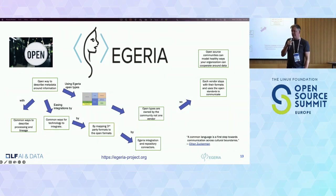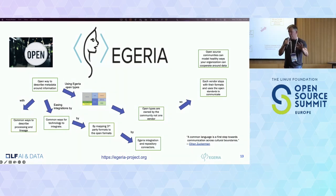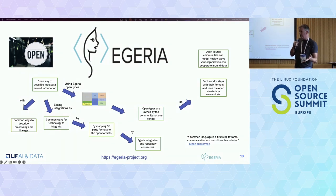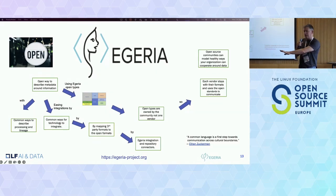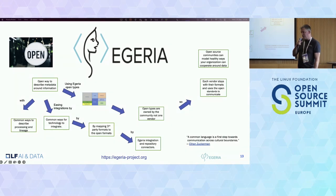If we all have our own language for everything, it makes it difficult to communicate. A common language is the first step towards communication across cultural boundaries. The data warehouse folks, the data scientists, the data owners, and the DB admins all have very different languages, very different cultures, different motivations and roles. These open types allow us to have a common language to cross those cultural boundaries within organizations.